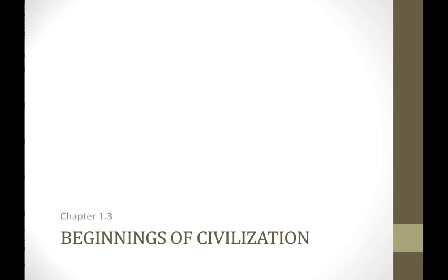Hi there. This video is going to begin our discussion of Chapter 1, Section 3, which is all about how we define civilization. In class and in our previous videos, we talked about the mechanism that makes civilization possible - the idea of more food leading to more people, and once you have more people, those extra people can focus on building up culture. But we never really talked about what exact elements of culture we put together to mean a civilization. So that's what this is all going to be about.